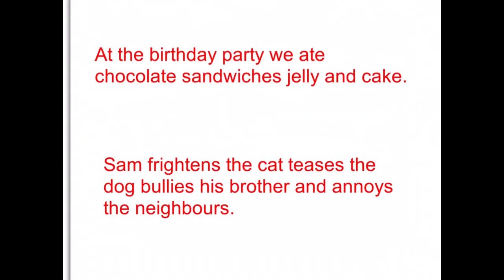Here are the answers. Sentence one: 'At the birthday party we ate chocolate, sandwiches, jelly, and cake.' 'And' comes just before cake because it's the last item. Sentence two: 'Sam frightens the cat, teases the dog, bullies his brother, and annoys the neighbours.' Again, 'and' appears before the last item in the list.